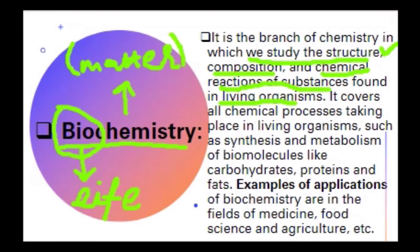We look at how molecules are structured, what their shape is, what their composition is — what atoms the molecule is made of — and what its chemical reactions are, i.e., which other molecules it reacts with — all found in living organisms. It covers all chemical processes and reactions that take place in the living organism, for example, synthesis and metabolism of biomolecules.